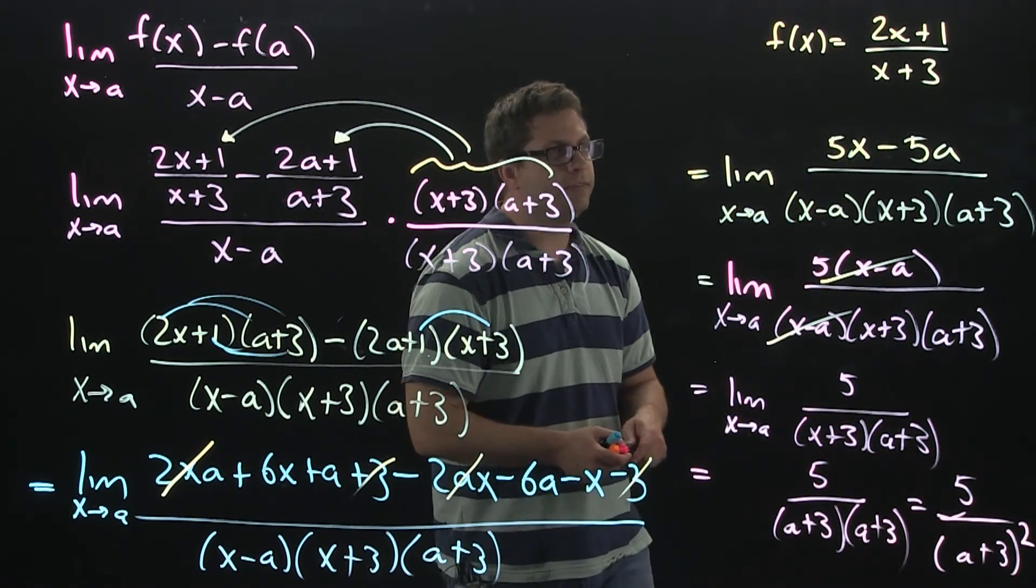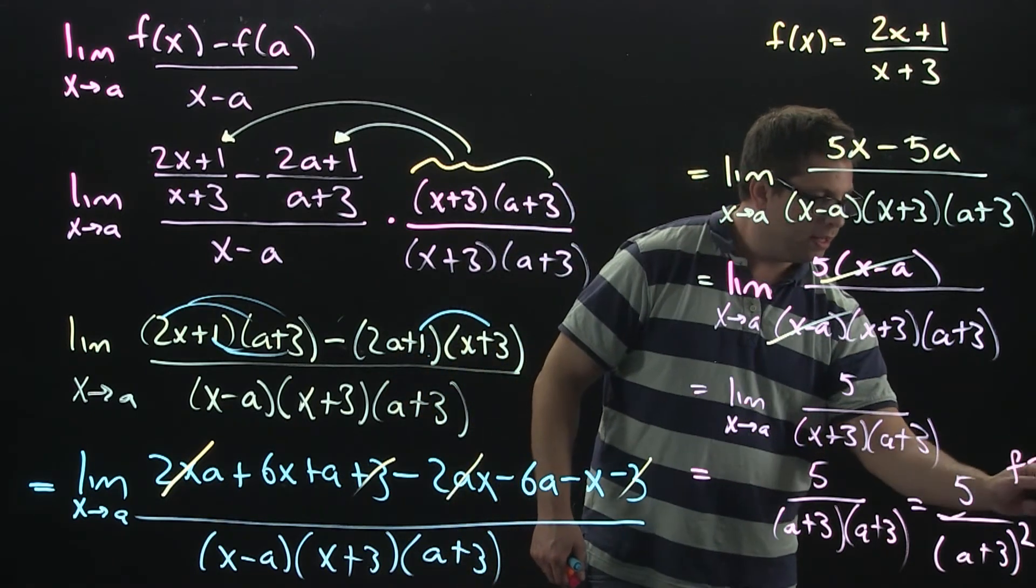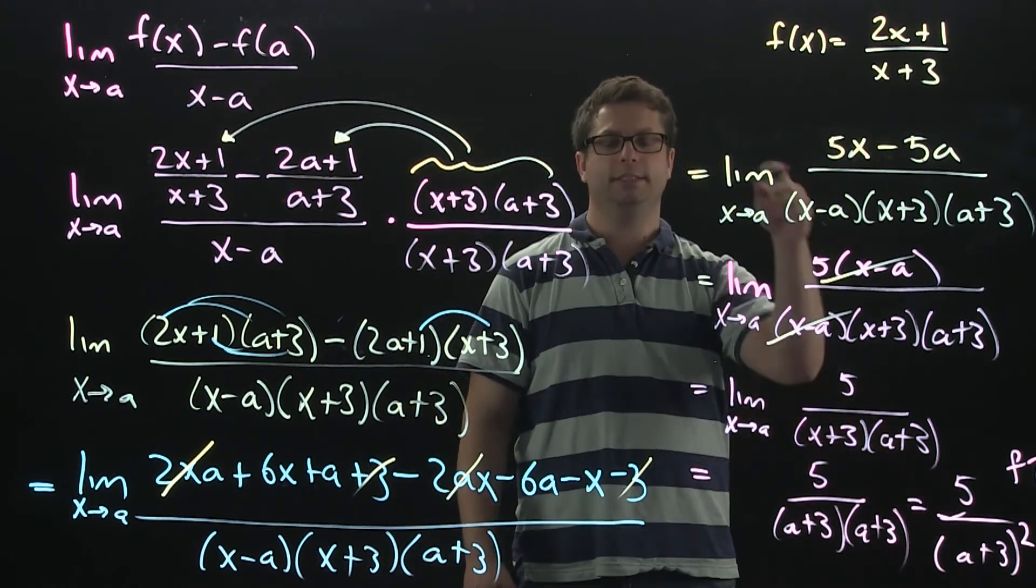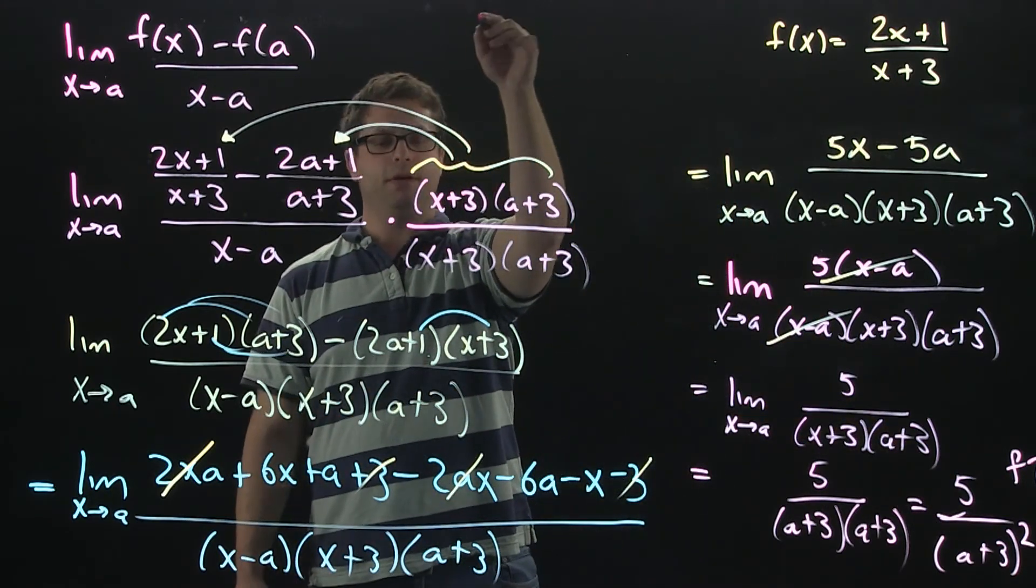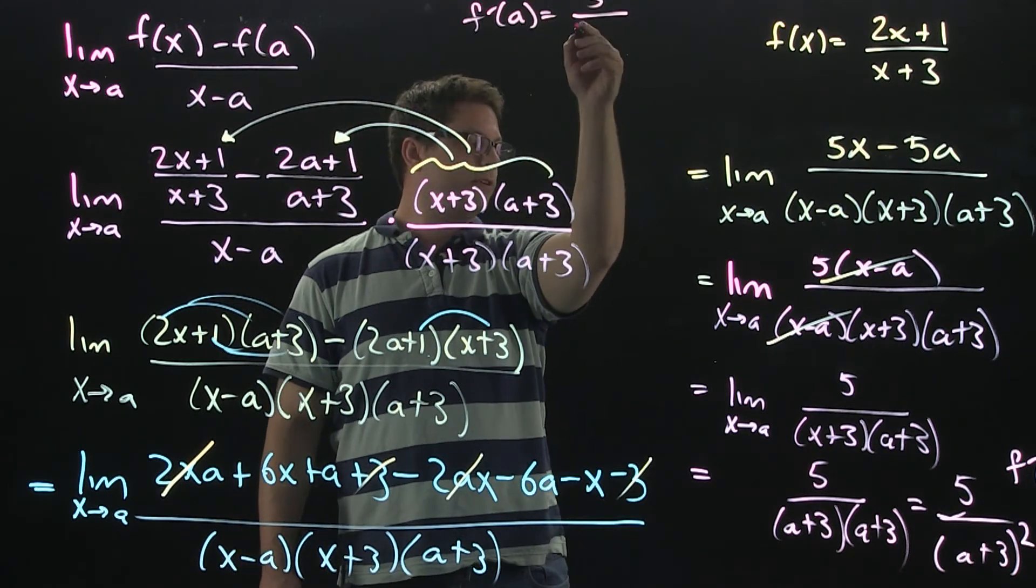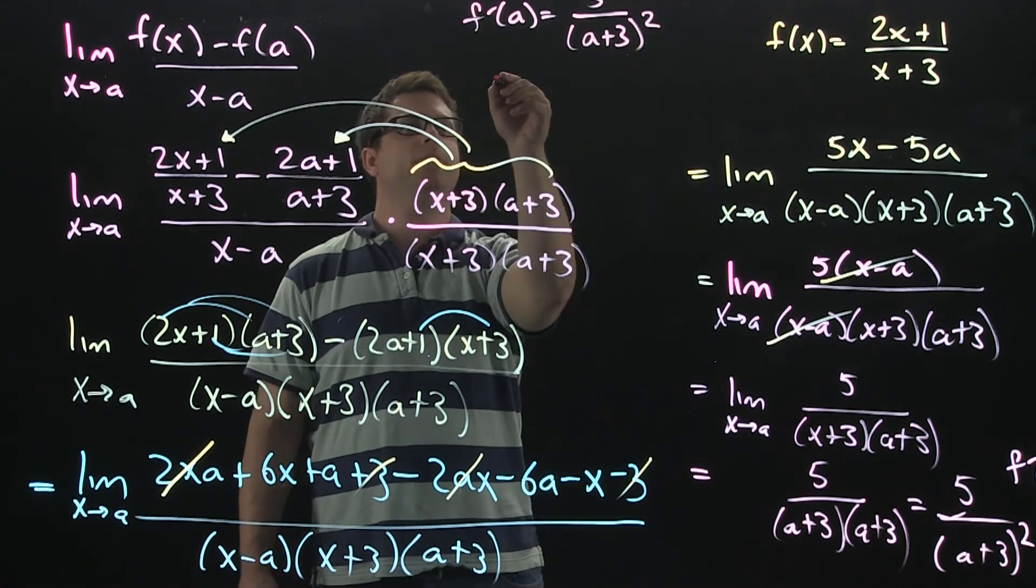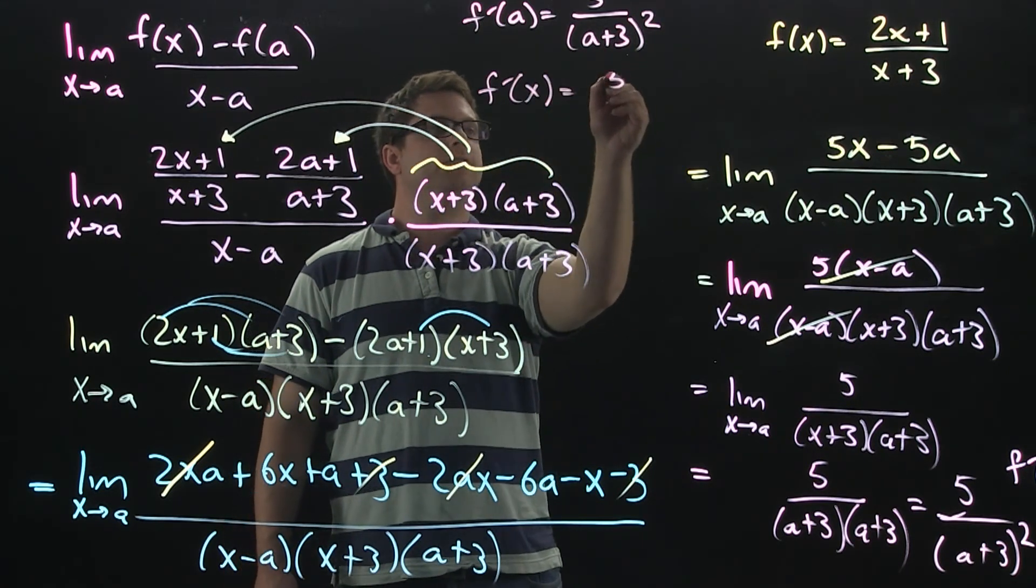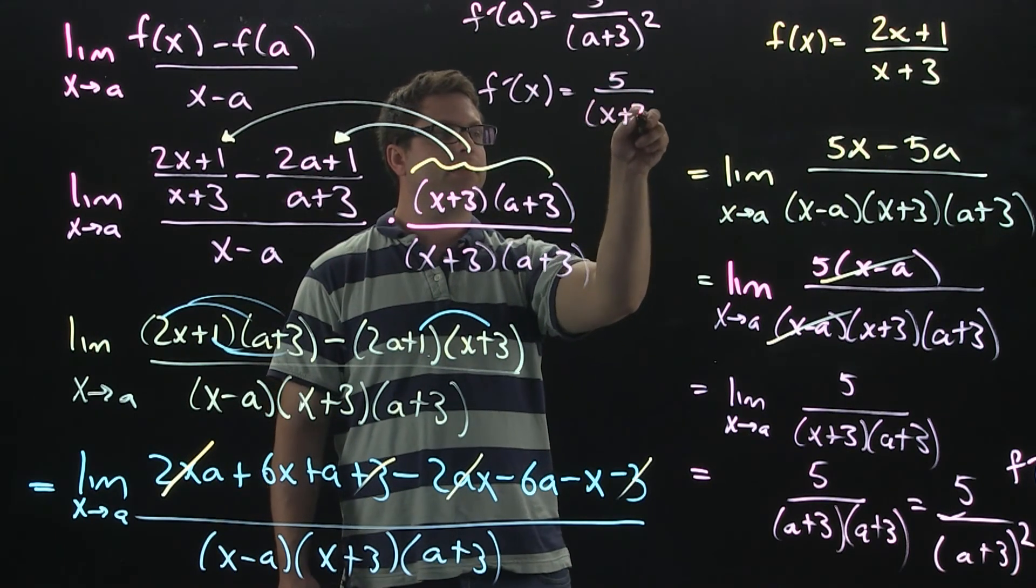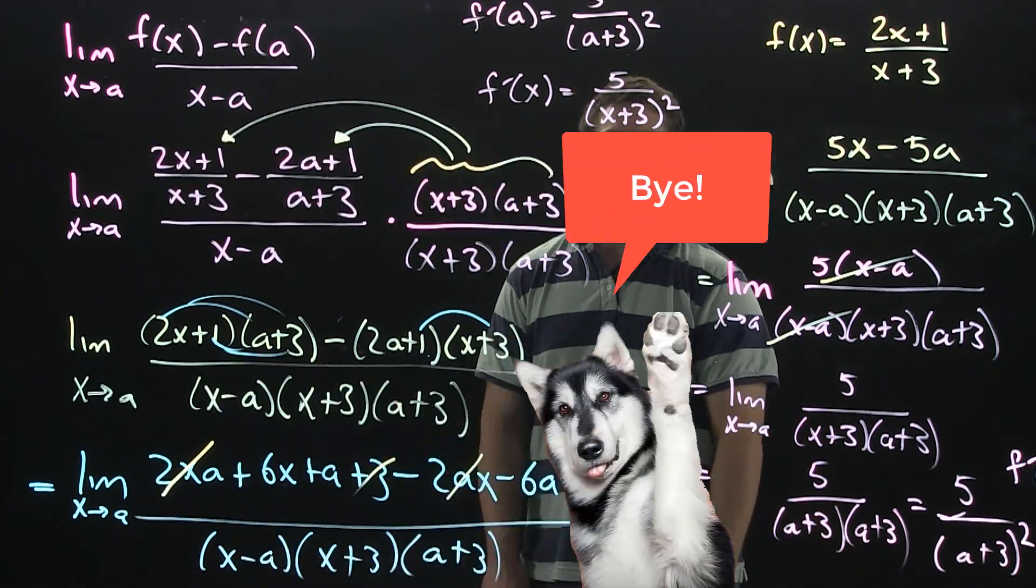Now, the question was to find the derivative f prime of a, which this is. But if you want to rewrite it as f prime of a or f prime of x, it doesn't matter. So, I'm going to come up here and do that. So, we could say f prime of a is 5 over a plus 3 squared. Or you can say f prime of x is 5 over x plus 3 squared. Okay, well, I hope that helps. Thanks for watching. Good luck. Bye.